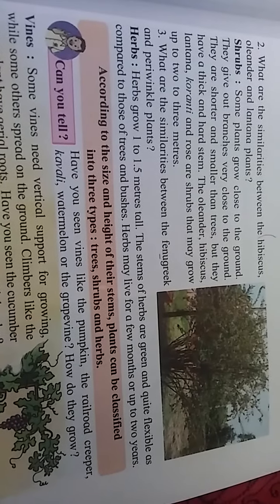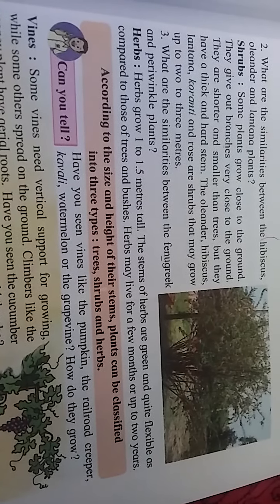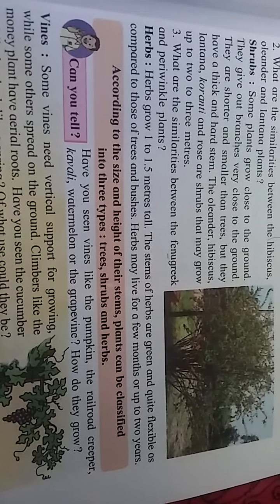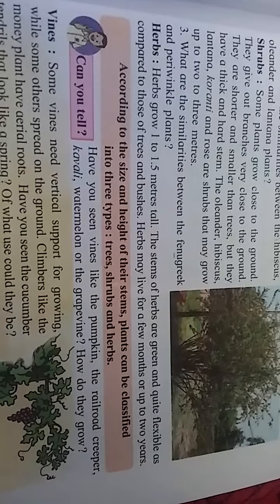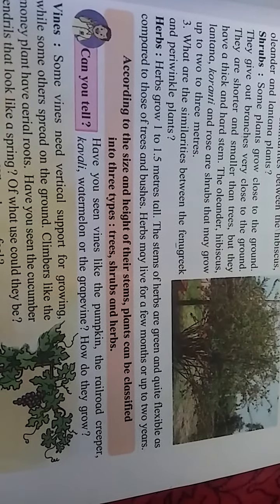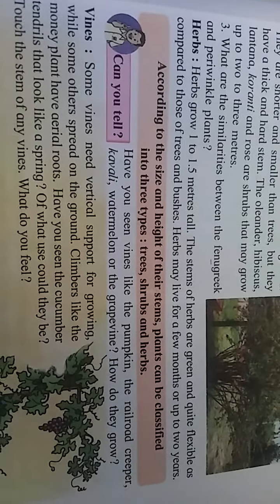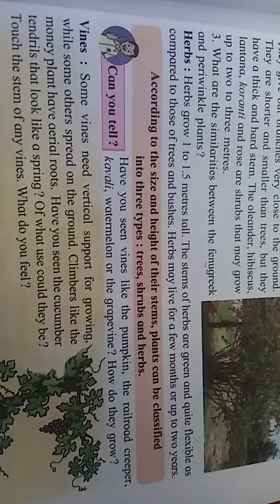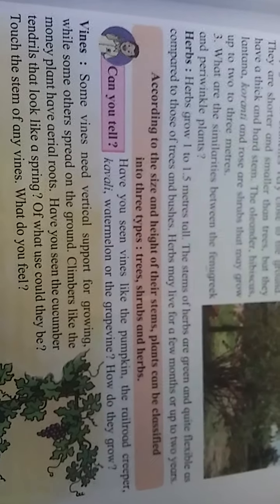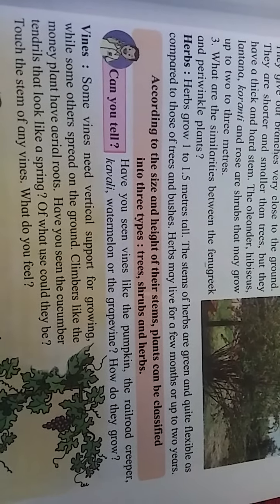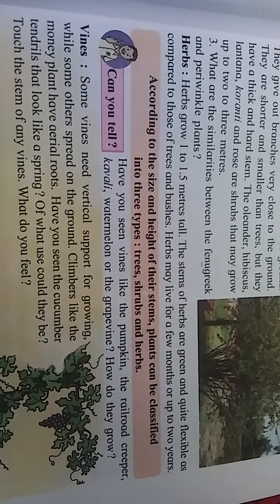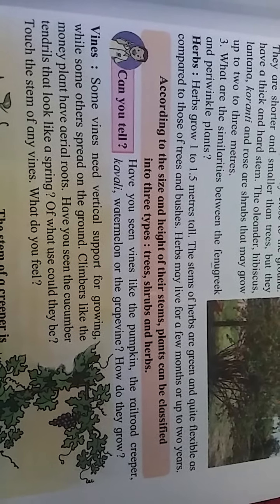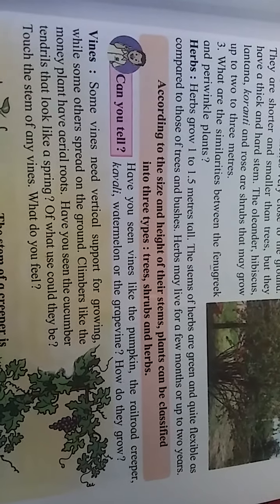What are the similarities between fenugreek and periwinkle plants? Both plants have a green stem that is very flexible — this is the similarity. Herbs grow 1 to 1.5 meters tall. The stem of herbs is green and quite flexible as compared to those of trees and shrubs. Herbs may live for a few months or up to 2 years.